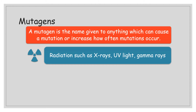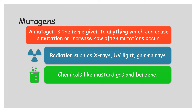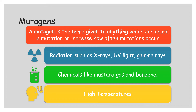UV light is associated with skin cancer, which is impacted by the amount of UV light exposure. Gamma rays, of course, are what caused the change from Bruce Banner into the Incredible Hulk in the comics. Chemical mutagens include mustard gas — used in World War I and World War II — and benzene, which can actually be found in cigarettes. Very high temperatures are also a mutagen. All of these things can cause mutations to happen more readily.